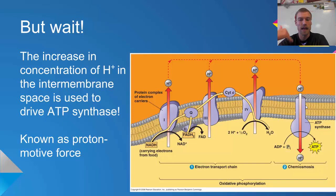ATP synthase is a protein that facilitates the transformation of ADP and phosphate into ATP, and that is the process that we call chemiosmosis.